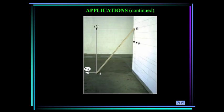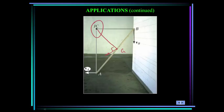As this board slides down the wall, it is subjected to general plane motion, which means it both translates and rotates. Since the direction of the velocities of the ends of the board, A and B, are known, we can determine the point of instantaneous zero velocity. Any point on this board, for instance the center of gravity, will have a velocity perpendicular to the line connecting the center of gravity and the instantaneous center of zero velocity.